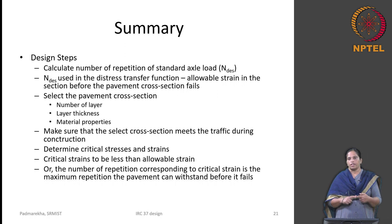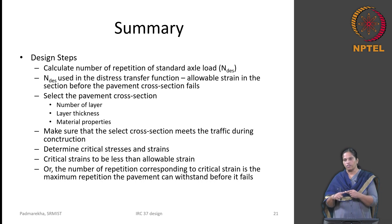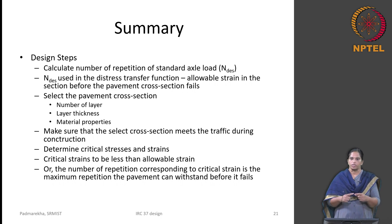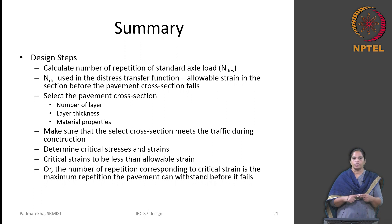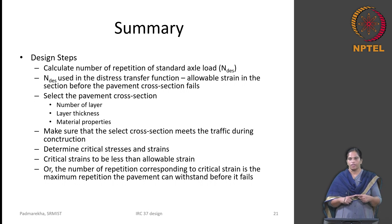After working with traffic data, select the pavement cross section by choosing the number of layers, layer thicknesses, and material properties. Ensure the selected cross section meets traffic requirements during construction so the subgrade will not fail in rutting or the cement treated layer in fatigue damage. Then, find the critical stresses and strain using the F-Wave software and check against the allowable strain values. The critical strain computed must be less than the allowable strain, or equivalently, the number of repetitions corresponding to the critical strain must exceed the design traffic. Thank you.